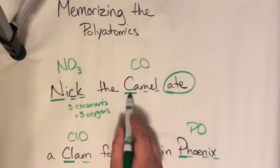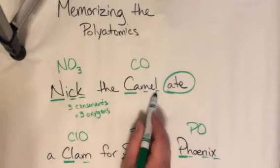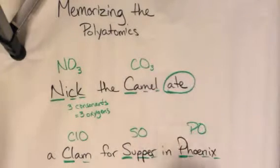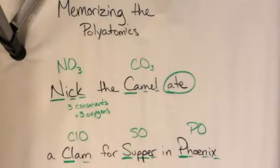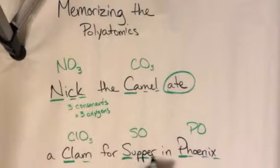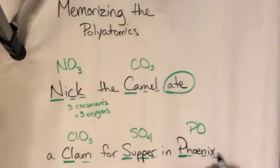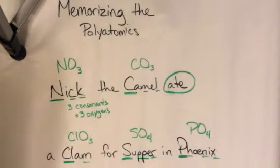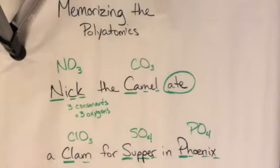If I count the consonants in "camel", I have C, M, L — that's three, so that would be CO₃. The formula for carbonate is CO₃. "CLM" — that's three. "SPPR" — that's four. "PHNX" — that's four. I've got the formulas, and I can do even better than that.